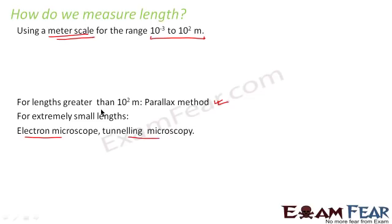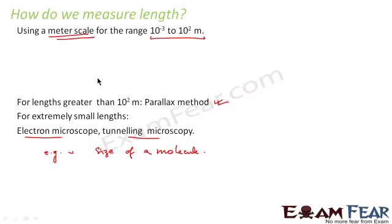An example of very small lengths would be the size of a molecule. The size of a molecule is so small that you cannot even see it with your naked eye. To measure the size of a molecule, you definitely cannot use a meter scale. Even normal microscopes don't have that much resolution. For such small lengths, we generally use special microscopes — that is electron microscopes or sometimes tunneling microscopes. These are the methods we use to measure lengths of different ranges.